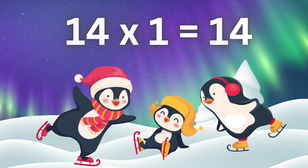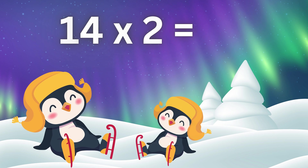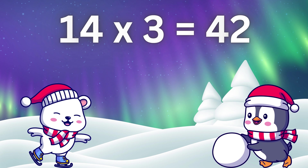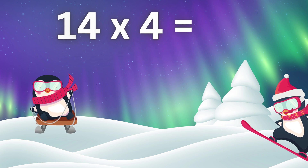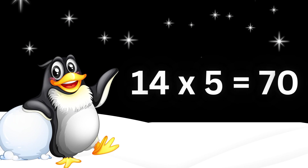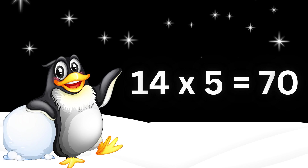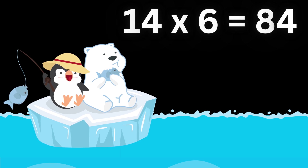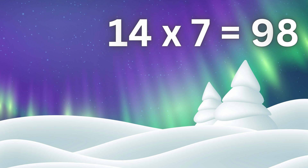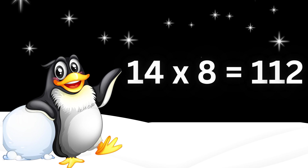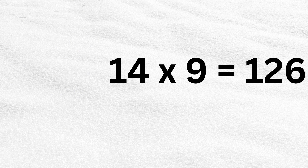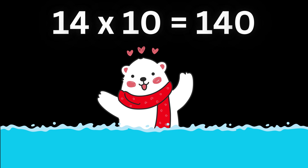Table of fourteen: fourteen ones are fourteen, fourteen twos are twenty-eight, fourteen threes are forty-two, fourteen fours are fifty-six, fourteen fives are seventy, fourteen sixes are eighty-four, fourteen sevens are ninety-eight, fourteen eights are one hundred twelve, fourteen nines are one hundred twenty-six, fourteen tens are one hundred forty.